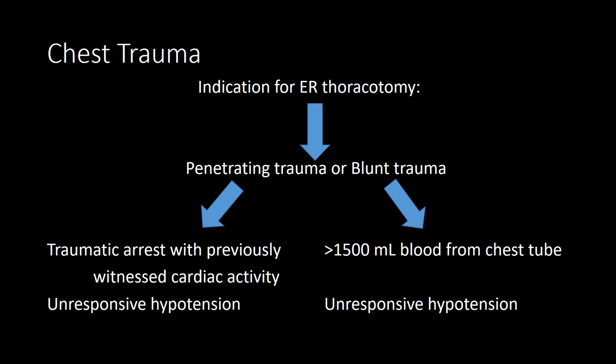The most commonly injured organ in penetrating chest trauma is the heart, specifically the right ventricle and right atrium. In blunt trauma with hypotension, the three main areas causing profound hypotension from blood loss are pelvic fractures, intra-abdominal injury, and intra-thoracic injury. If a patient has a head injury and hypotension, look elsewhere for the cause — it is not due to the head bleed.